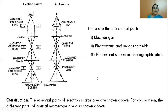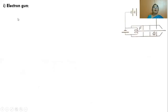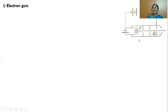Let us now see how an electron microscope is constructed. First, we must understand how the electron gun functions. The electron gun has a tungsten filament. With the help of a low tension battery, the tungsten filament is heated, and due to thermionic emission it emits electrons. Due to their similar charges, the emitted electrons repel each other and diverge in all directions from the filament.